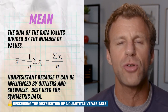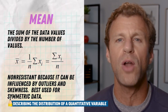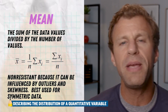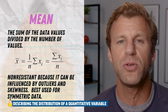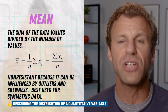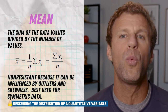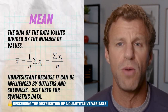Remember, the mean is trying to balance everything out. And if there's one really large outlier, the mean is going to move up a little bit because of it to keep it balanced. That one large outlier might only be one value, but it weighs just as much as a bunch of the other small values.